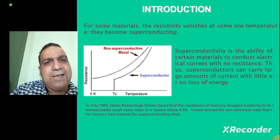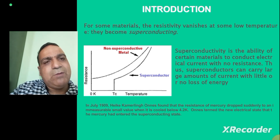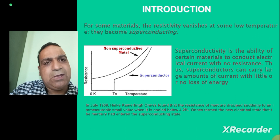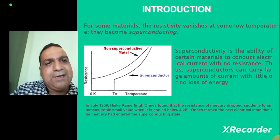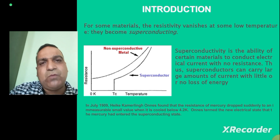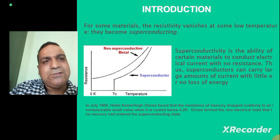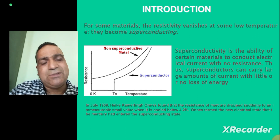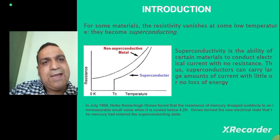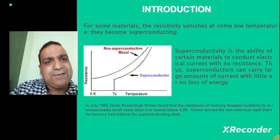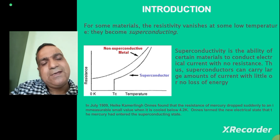In 1909, Kamerlingh Onnes came across a situation while performing this experiment on mercury. When he cooled down his system close to 4.2 Kelvin, he observed a very sharp transition. He found that he was not able to measure the resistance of mercury at 4.2 Kelvin — it was immeasurable, as if there was no resistance in the conductor.